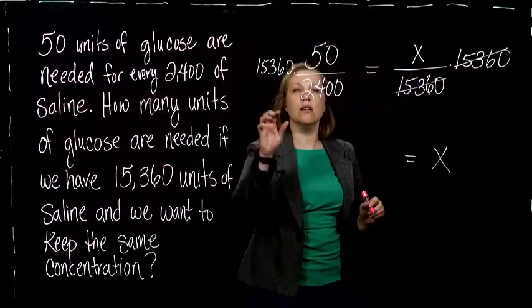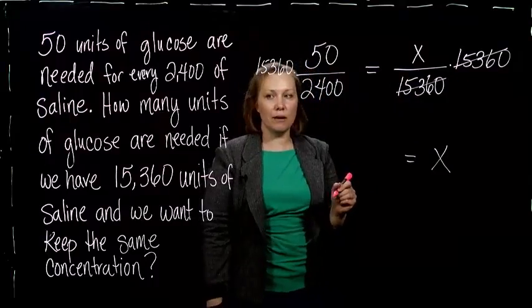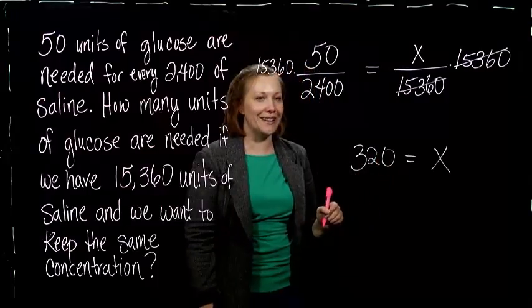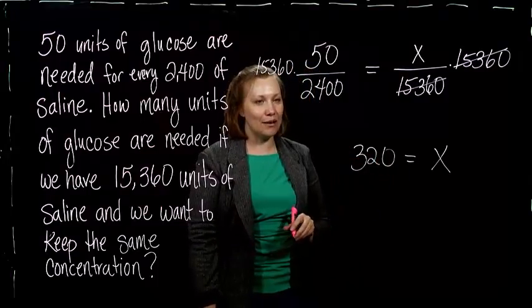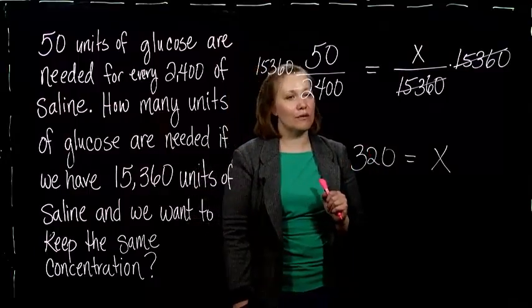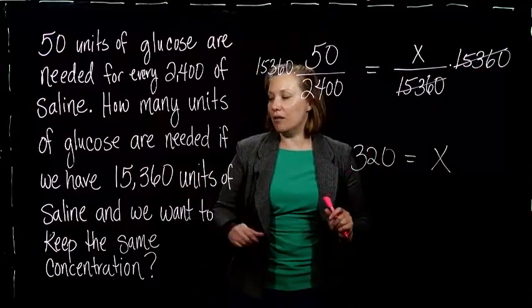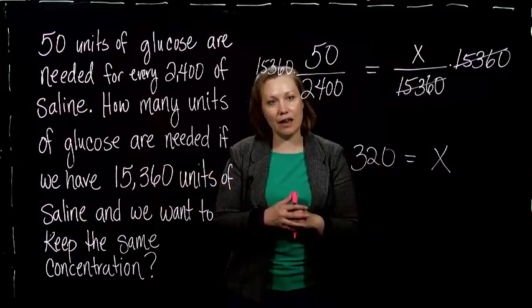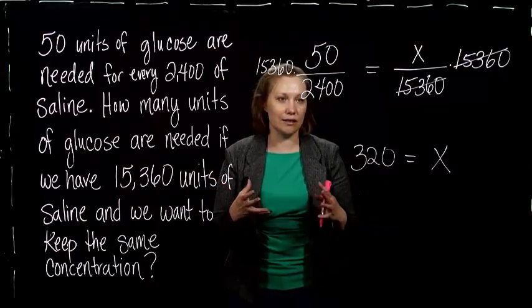And when we multiply by 50 and divide by 2,400, this is going to seem a little bit like magic. There's a little bit of work to that, but we get an answer of 320. So what that means is we need 320 units of glucose with our 15,360 units of saline if we want to keep the concentration the same.